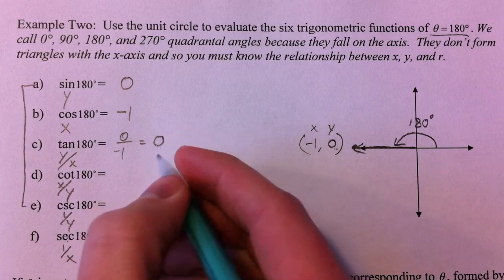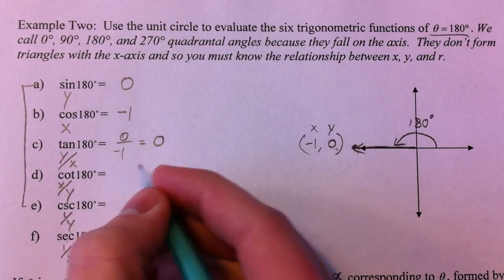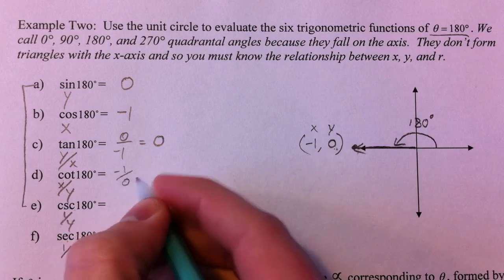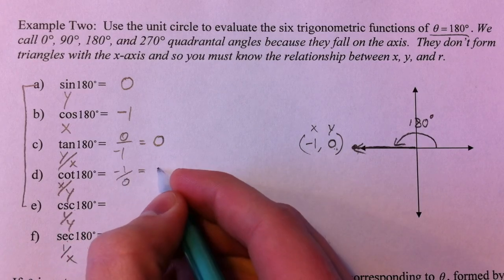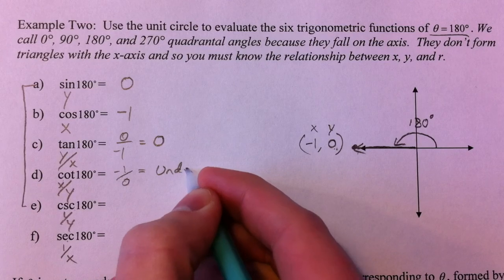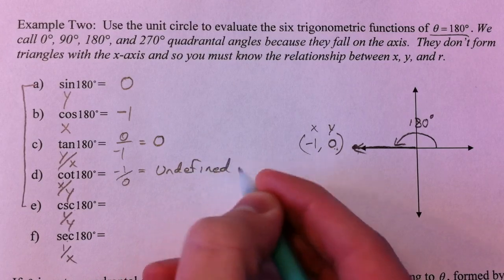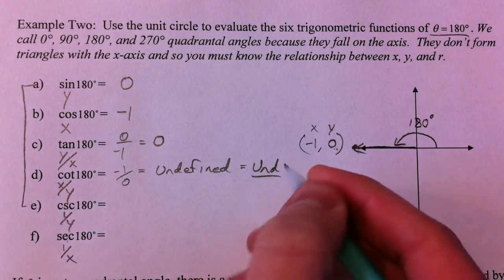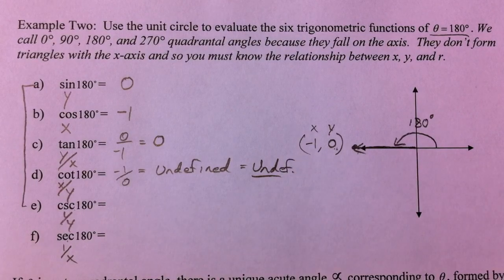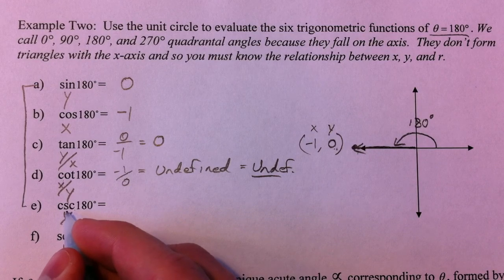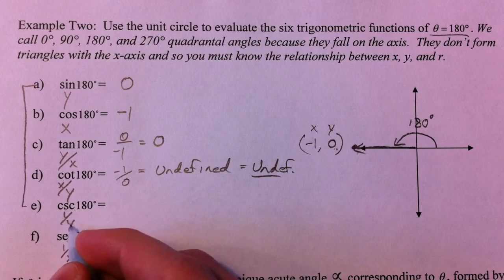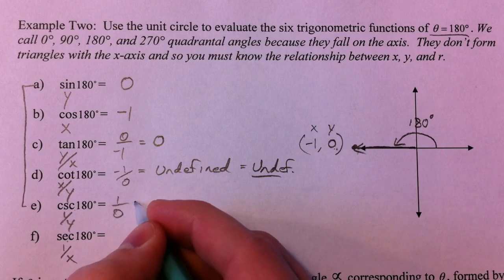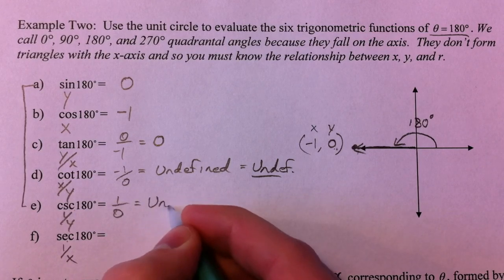The reciprocal of 0 doesn't exist. Negative 1 over 0, or 1 over 0, anything, undefined. And we'll probably use the shortening of that and just say undefined. Or undefined, maybe like that. The reciprocal of the y-value also doesn't exist because it's just 1 over 0, undefined.